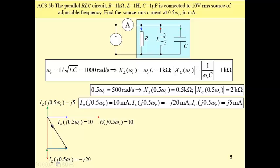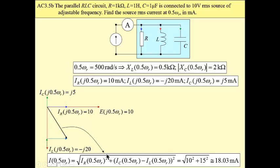The total current is the hypotenuse of this right-angled triangle. This leg is 15, this leg is 10. The hypotenuse length is 18.03 mA. So the total current is 18.03 mA.